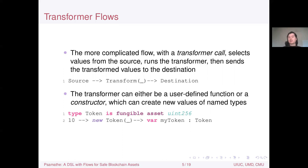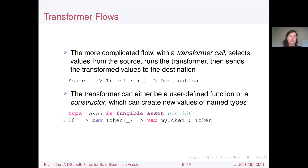The transformer can either be a user-defined function, like transfer, or a constructor which creates new values of named types. For example, recalling our token type declaration, on line two we create a new token value with value 10 and store it in a variable called my_token — this is a transformer flow.